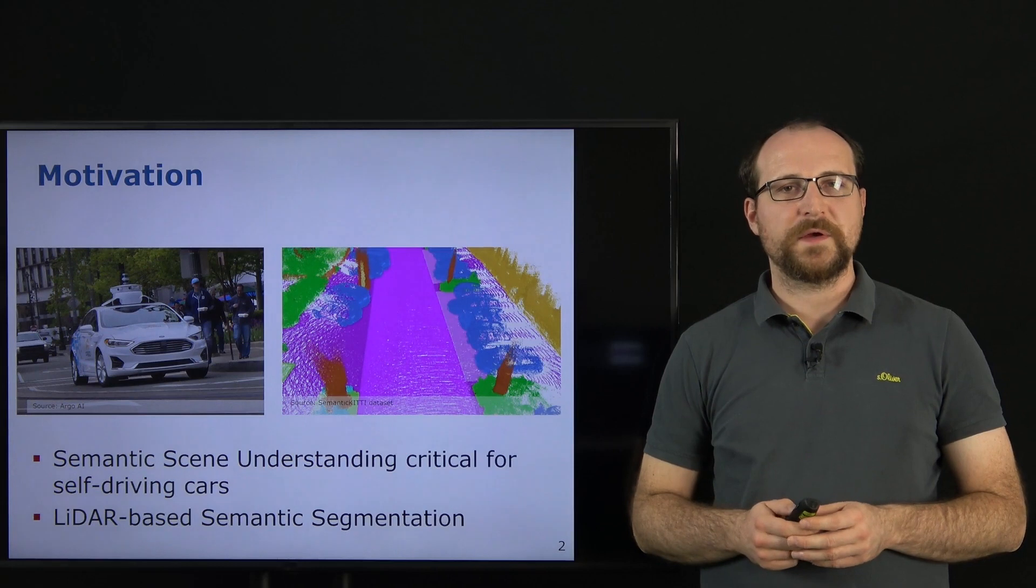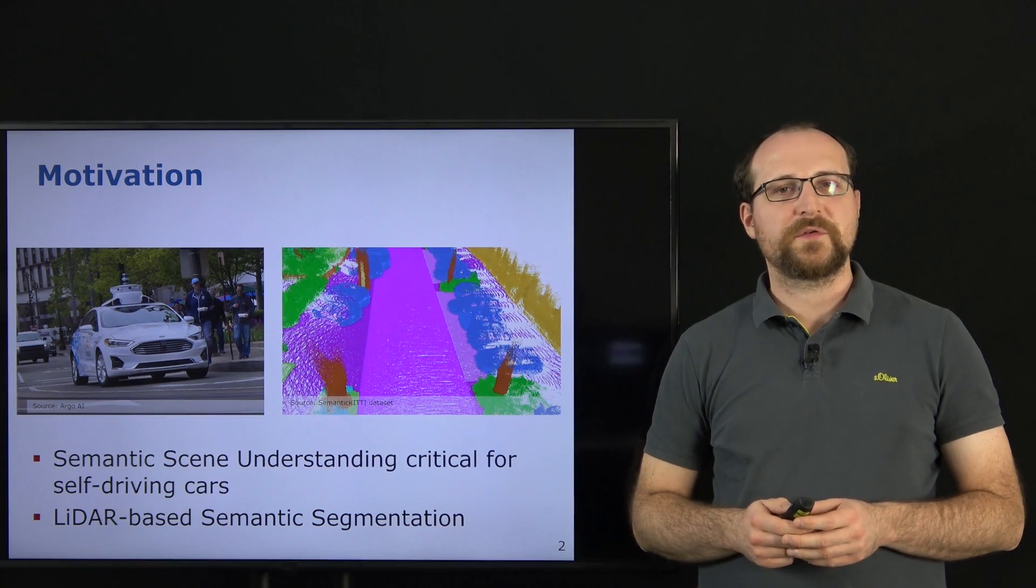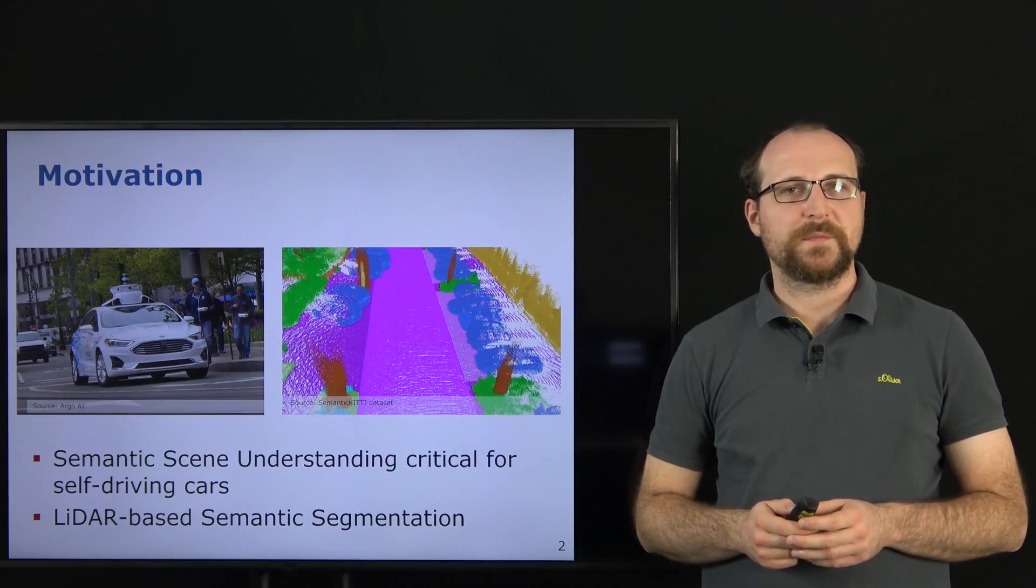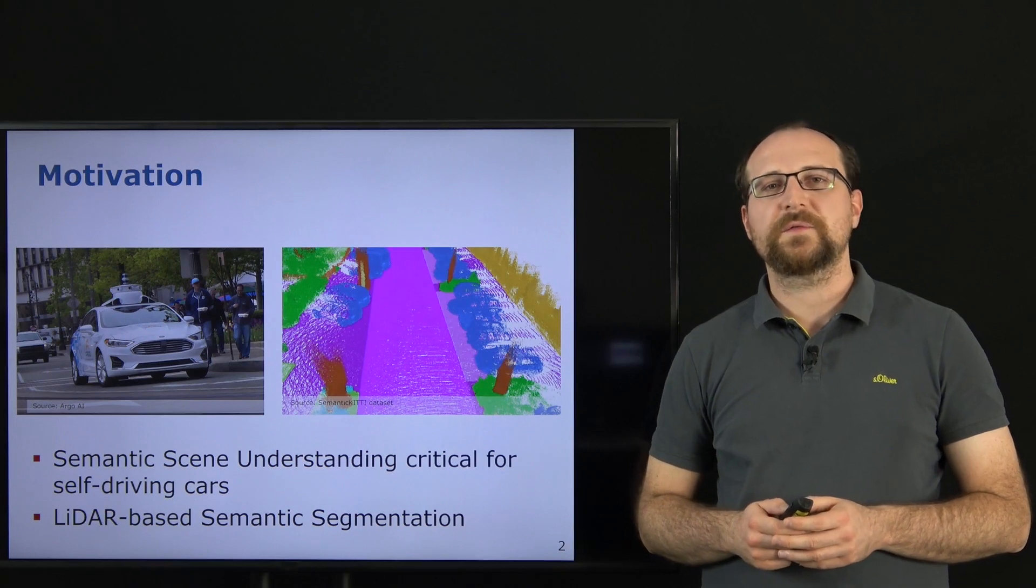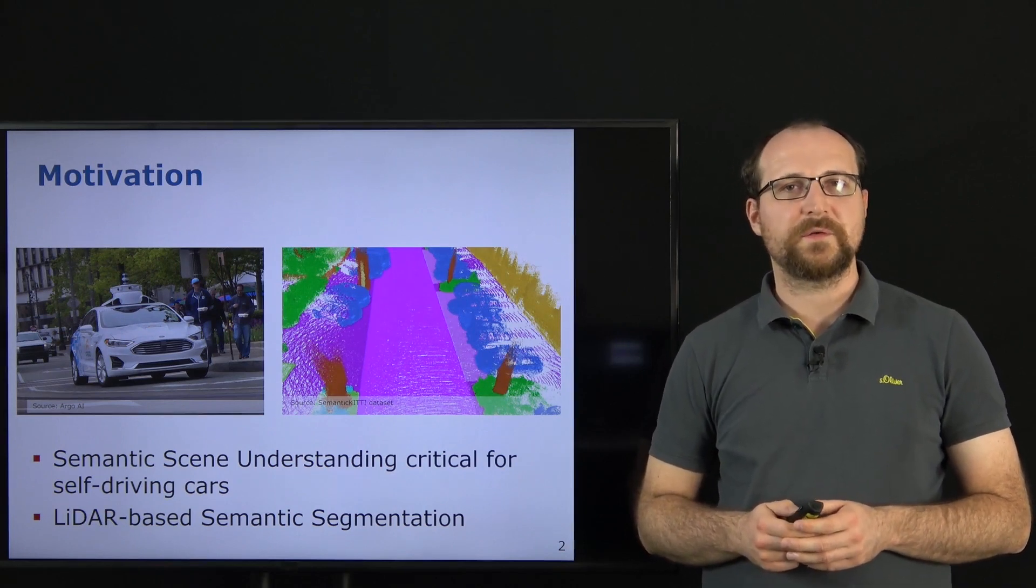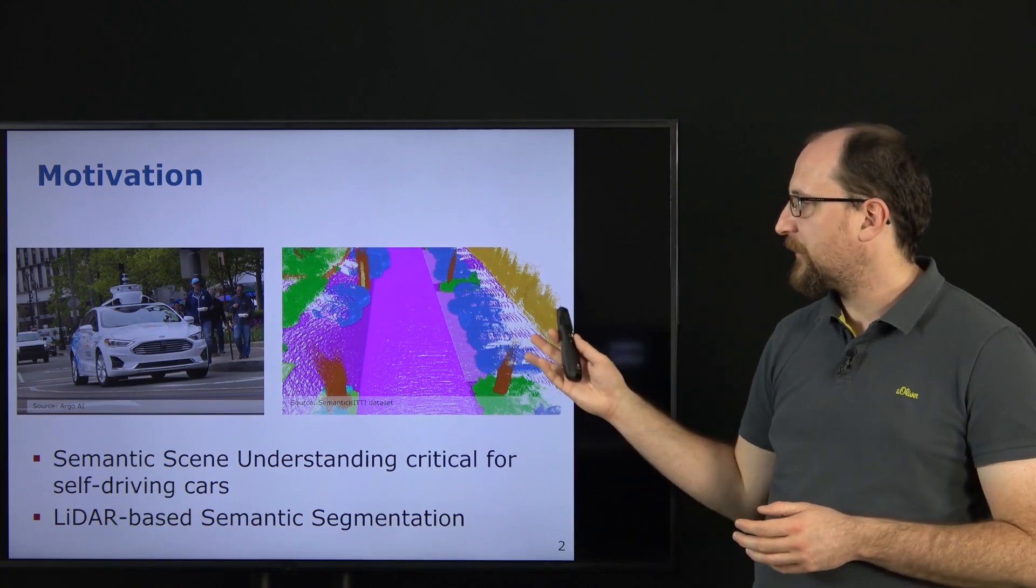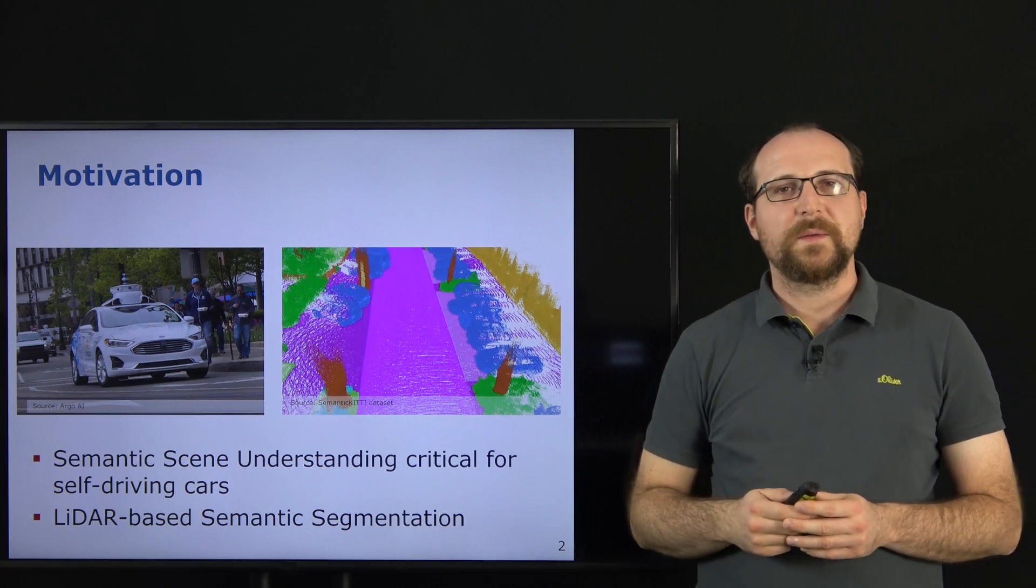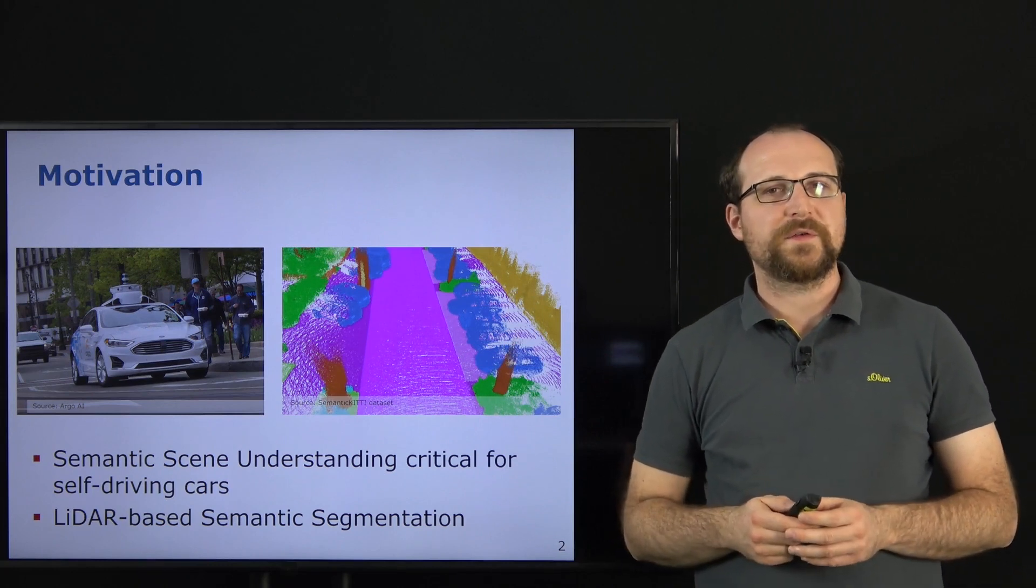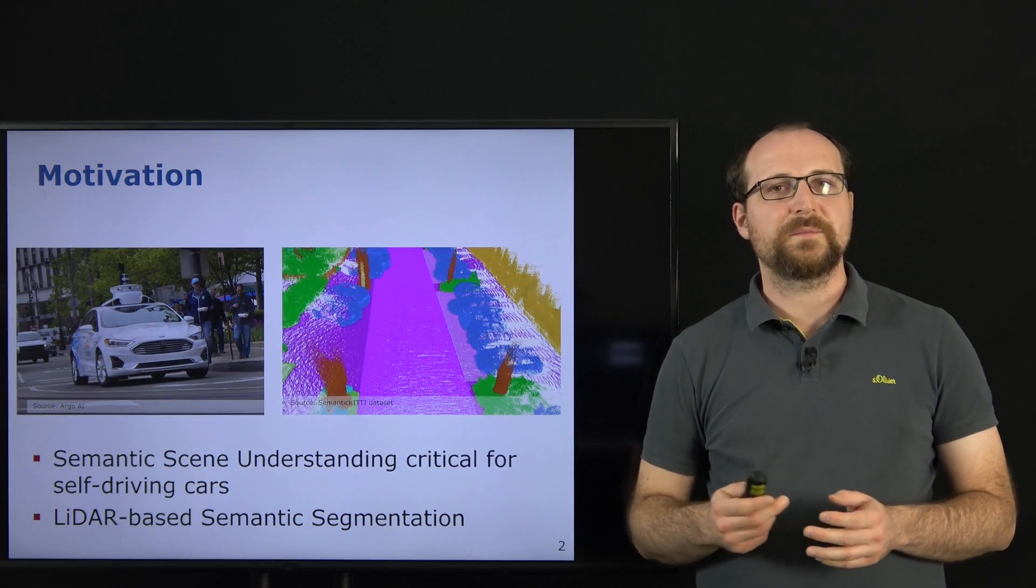In this work we are interested in semantic scene understanding provided by LiDAR-based semantic segmentation, where an approach needs to assign labels for each point of a point cloud. This information is particularly important for self-driving cars, as it provides information about the functional road surface types found in the surrounding, such as road, sidewalk, and parking areas, and also provides information about the extent of traffic participants, such as cars, bicyclists, and pedestrians.